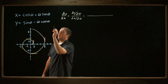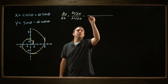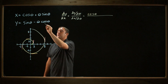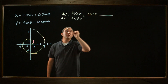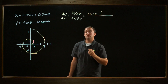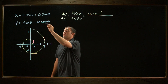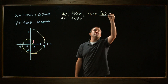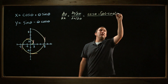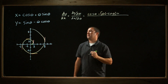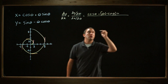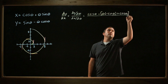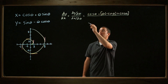The derivative of y with respect to theta: the derivative of sine theta is just cosine theta. The derivative of negative theta cosine theta — I'm going to have to use the product rule. I'll leave the first alone, theta, times the derivative of cosine theta, which is negative sine theta, plus, leaving the second alone, cosine theta, times the derivative of theta, which is just 1. So that's the derivative of y with respect to theta.